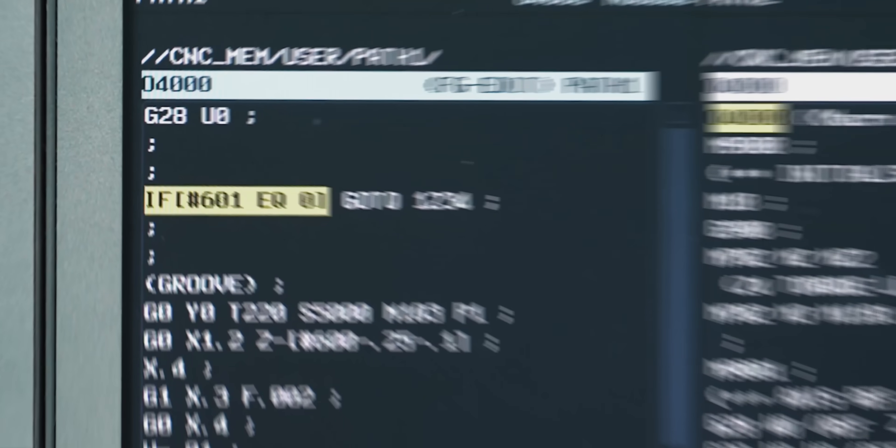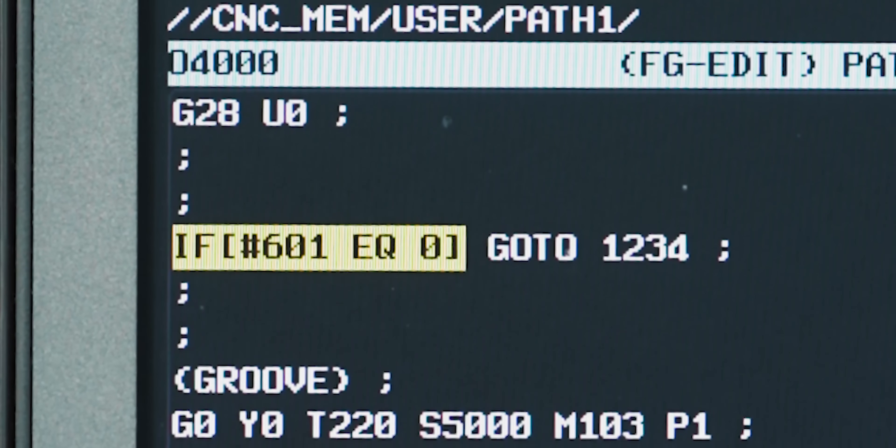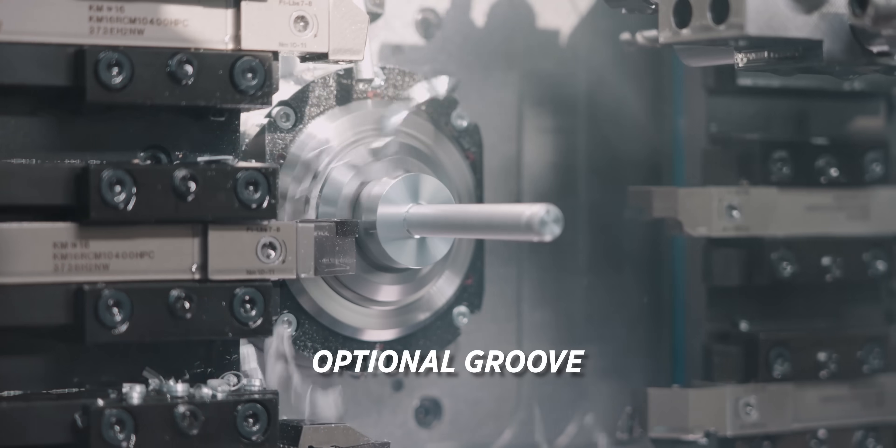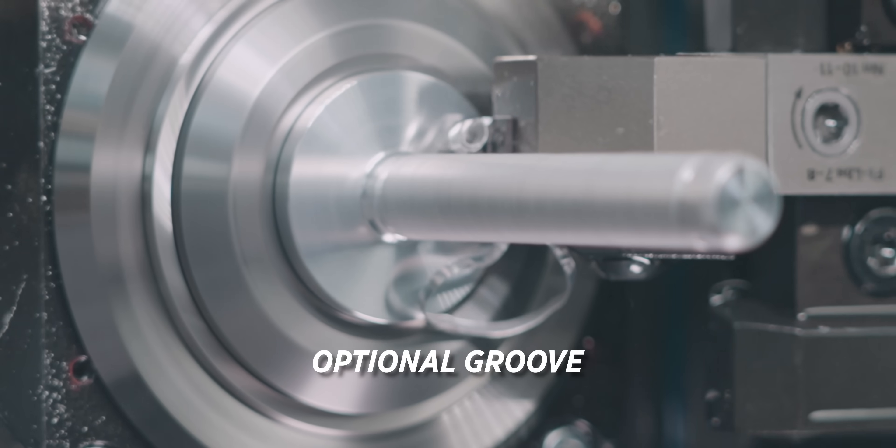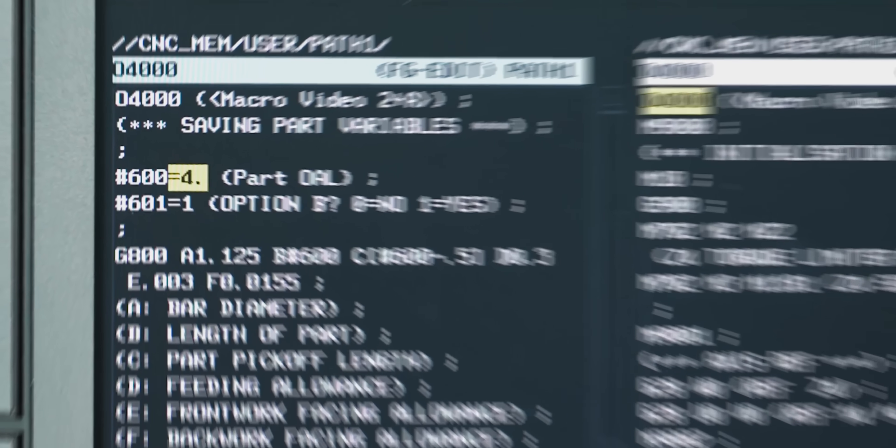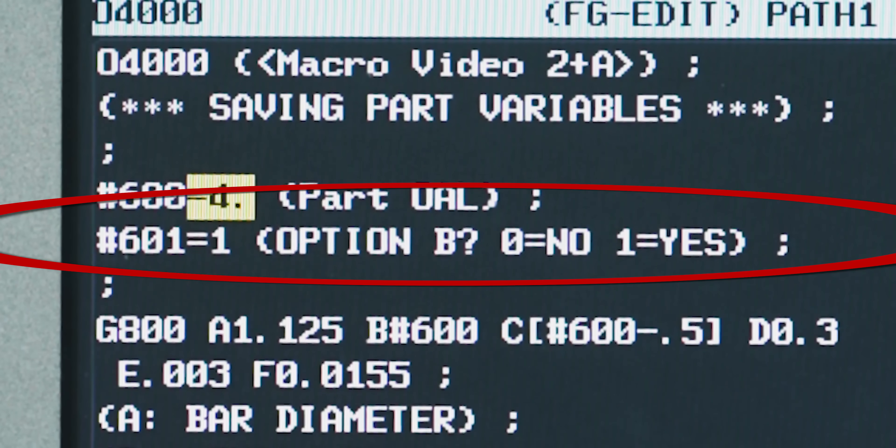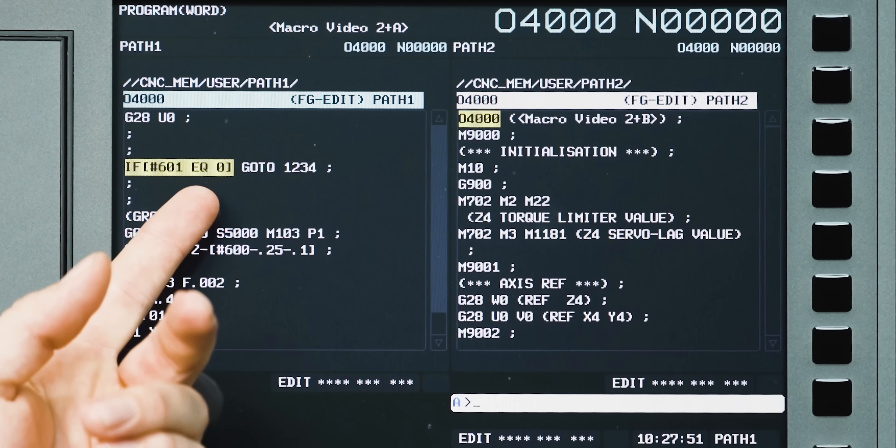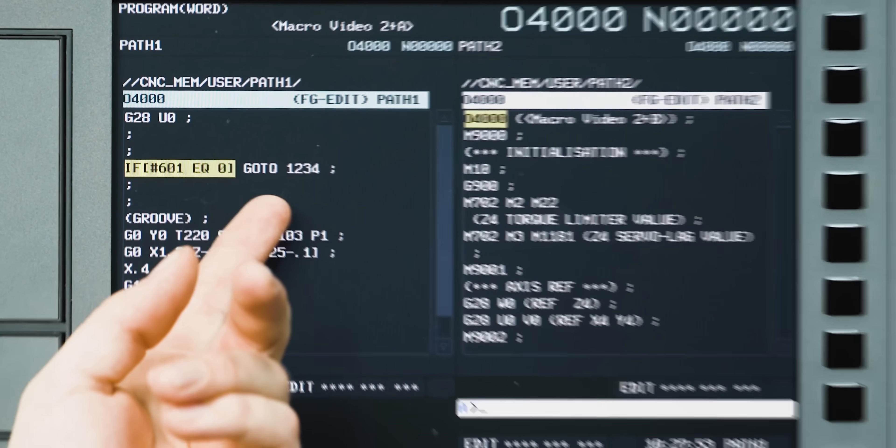But now we're going to come into an if statement. After the turn section we get to the optional groove. Earlier I said if pound 601 is a zero that means no, if it's a one it means yes. So it says right here if it's equal to zero, go to one two three four. That's just n1234.